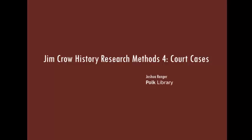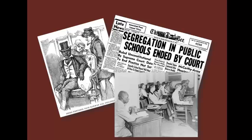Throughout the Jim Crow era, individuals challenged discriminatory laws in state or federal court. Some of these laws are quite famous, like Plessy v. Ferguson, that upheld the constitutionality of the concept of separate but equal accommodations, and of course Brown v. the Board of Education, which overturned that decision. Others are less known, like Sweatt v. Painter, one of the so-called graduate school cases that challenged segregation in higher education.